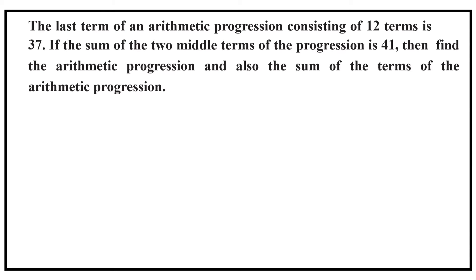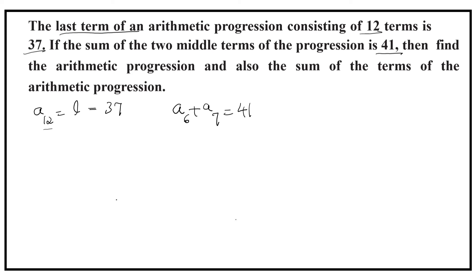In the next question, the last term is given. The number of terms is 12, and A12, which is the last term, is 37. The sum of the 2 middle terms is given. Since the number of terms is 12, the 6th and 7th terms are the middle terms. So the 6th term plus the 7th term equals 41.